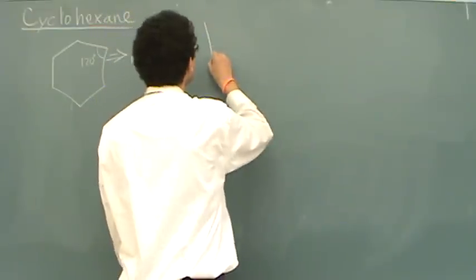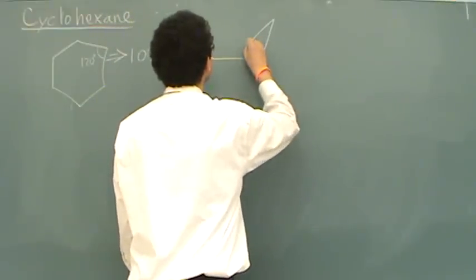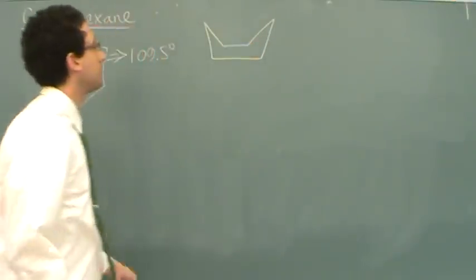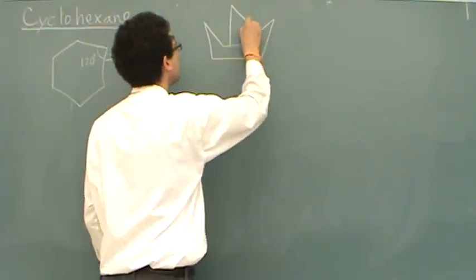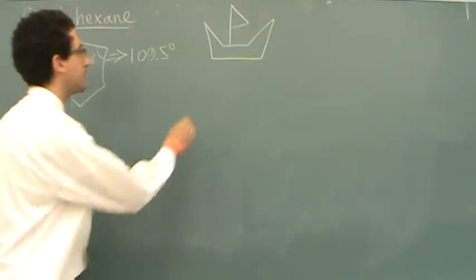It can buckle like this, where two ends kind of bend up, and if you can use your imagination, that looks like a boat. And so this is called the boat conformation.